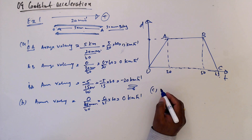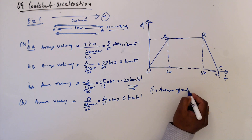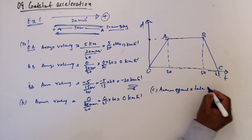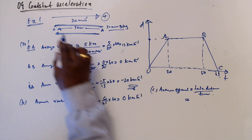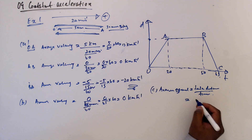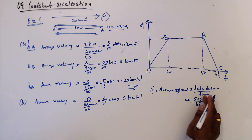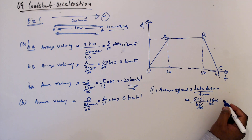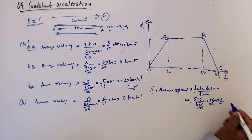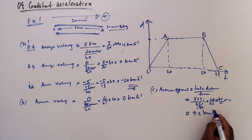Part c: work out the average speed. Average speed equals total distance divided by time taken. Total distance is 5 km out plus 5 km back, which is 10 kilometers. Time taken is 65 minutes, so 10 divided by 65 over 60, which equals 9.2 kilometers per hour. We will now discuss Exercise 9A.